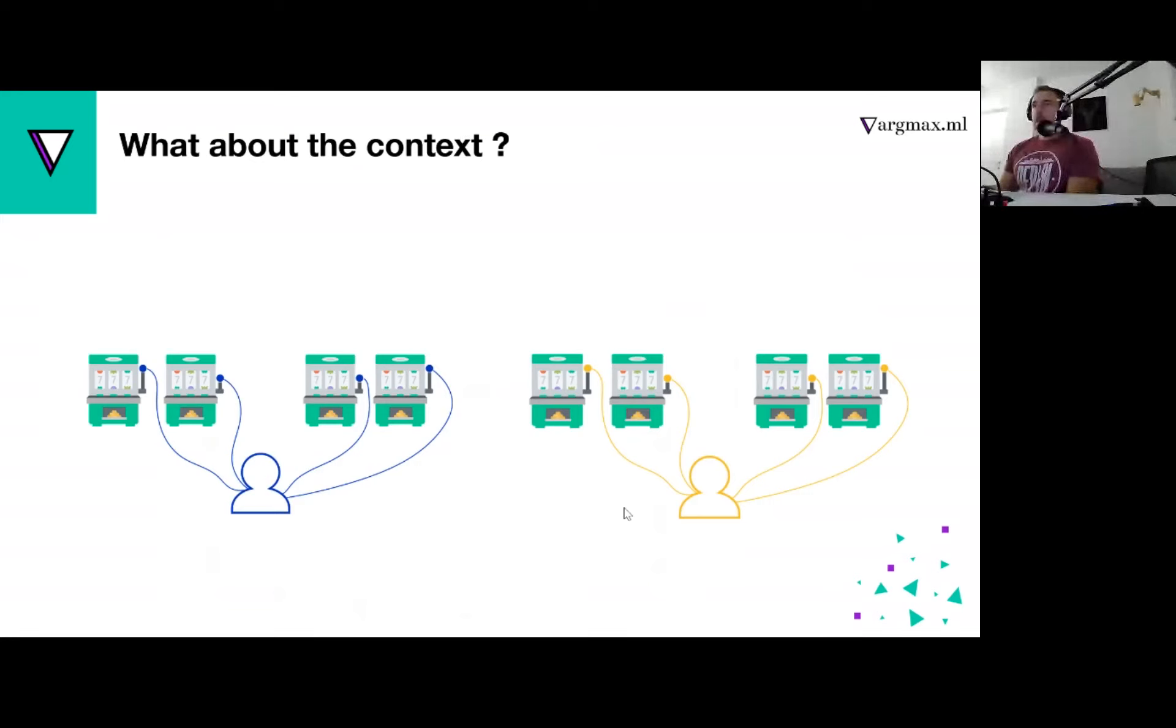Another challenge with multi-armed bandits is what about context? For example, I'm displaying the same ad for users from Japan and users from the United States. The culture is completely different and we need to account for that. Maybe certain colors are more popular, certain graphics, certain wording. Multi-armed bandits are not really suited for dealing with context, which brings us to the topic of contextual bandits.